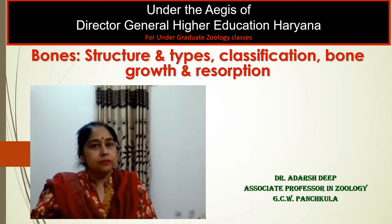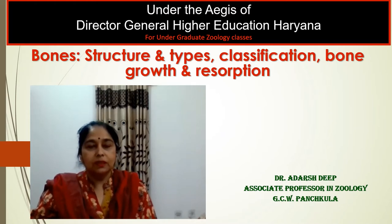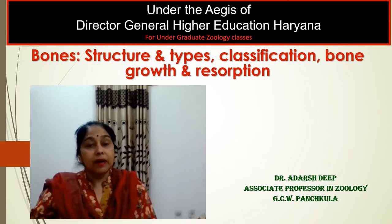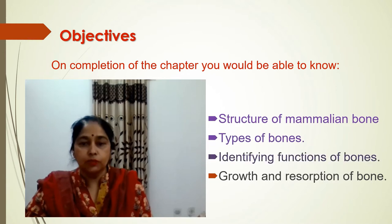As you know, bones form the major part of the endoskeleton of bony fishes and tetrapods, including man. The basic structural unit of the human skeleton is bone. Bones are solid, rigid, highly vascular, living and constantly changing mineralized connective tissue, remarkable for its hardness and regenerative capacity. On completion of the chapter, you would be able to know the structure of mammalian bone, types of bones, functions of bones, and also growth and resorption of bone.